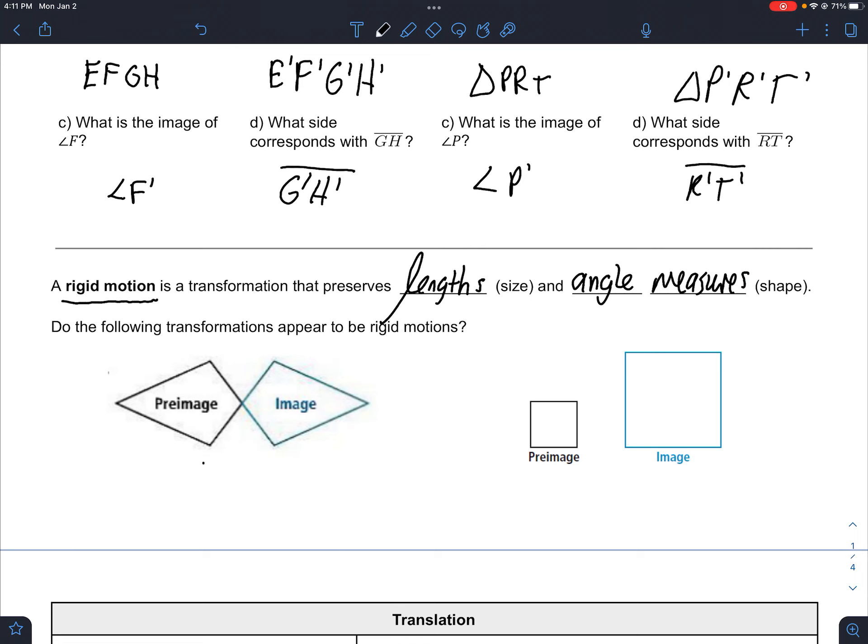This one here, it looks like maybe we could reflect it. But the lengths, like this length here, looks about the same as this length. So this appears to be a rigid motion, because we can literally cut it out and move it from the pre-image to the image.